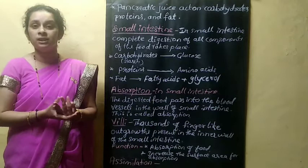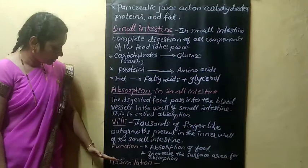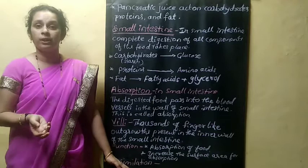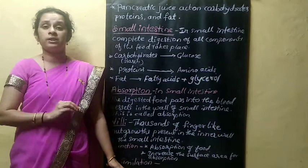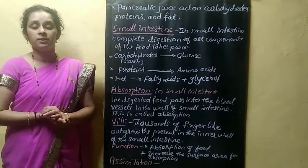The steps in digestion are: ingestion, digestion, absorption, assimilation, and egestion. In assimilation, digested food is transported and circulated to the organs, tissues, and cells of the body. When the digested food reaches the cells, it mixes with oxygen and is converted into carbon dioxide, water, and energy through the process of respiration.